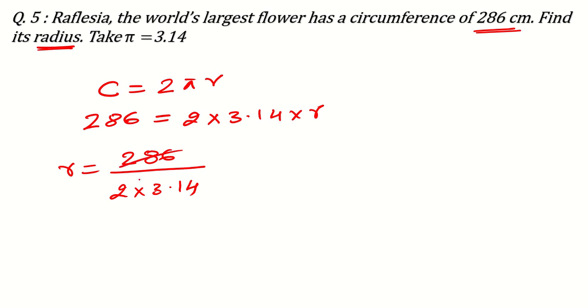If you want, you can use the calculator here or if you want, you can do it manually also. How you will do it? 286 can be divided by 2. 2 1s are 2, 2 4s are 8, 2 3s are 6. So 143 divided by 3.14. I will do it with the calculator. 143 divided by 3.14 is 45.54 centimeter. In some questions, they can say that round your answer to the nearest hundredth. That also we will practice.